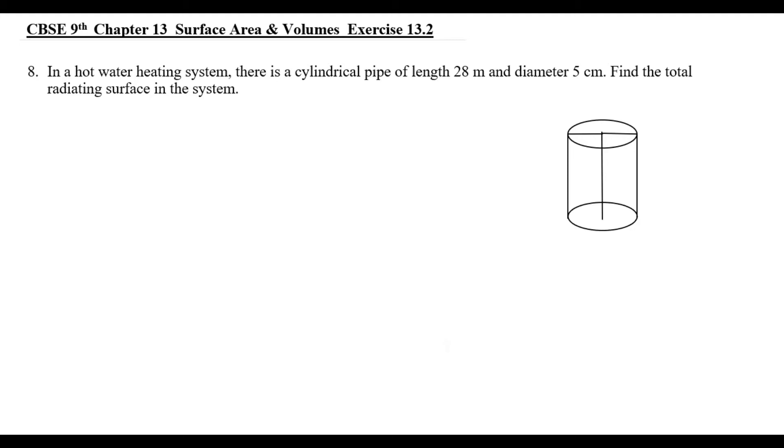Eighth sum. In the hot water heating system, there is a cylindrical pipe of length 28m and diameter 5cm. Find the total radiating surface in the system.